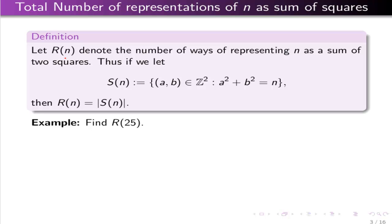We'll use capital R(n) to denote the number of ways n can be expressed as a² + b². To be precise, I'll let capital S(n) denote the set of ordered pairs of integers such that a² + b² = n. And capital R(n) is then the cardinality of this set.